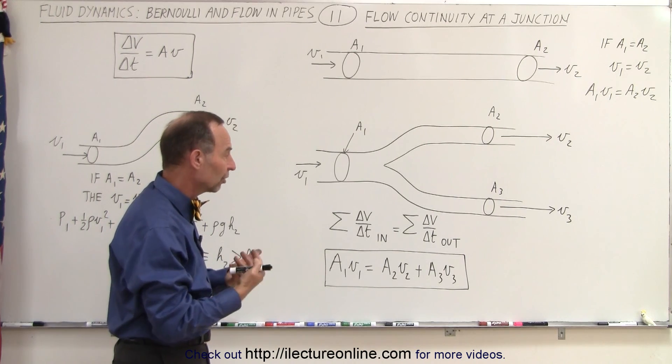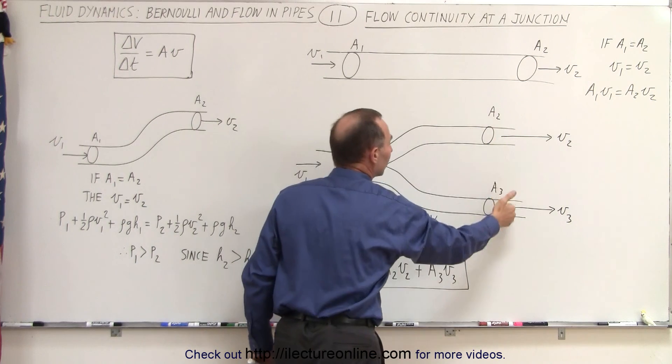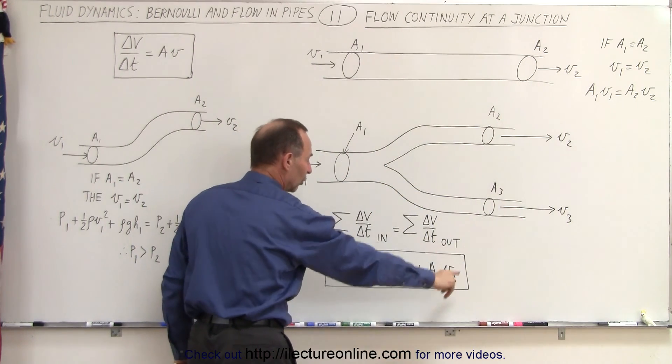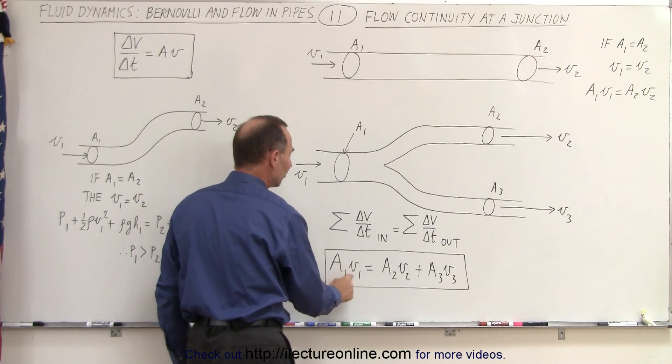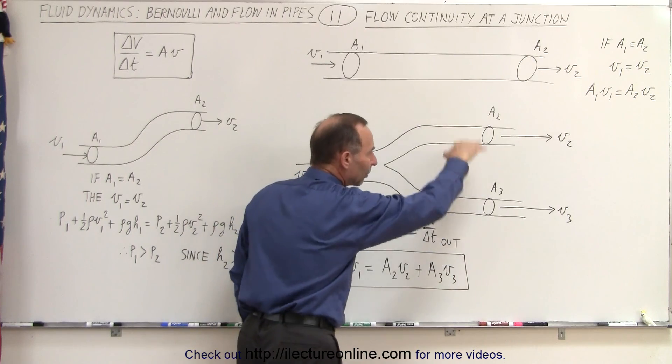But ultimately, what we're interested in here is to say, well, what would be the velocities in the smaller pipes? And the only thing we need to worry about is this equation right here, that A1V1 here must equal the sum of the A times V of all the pipes.